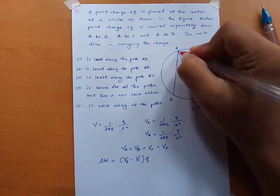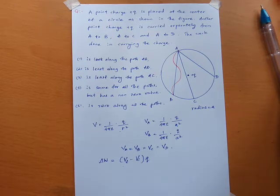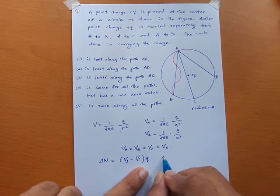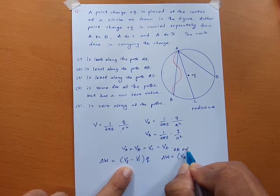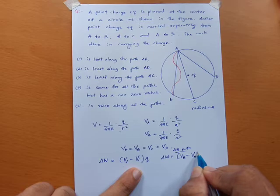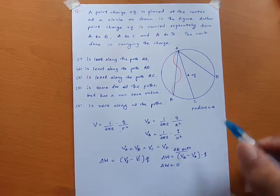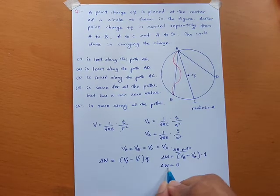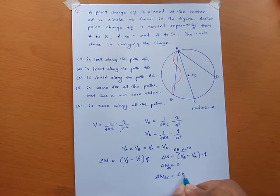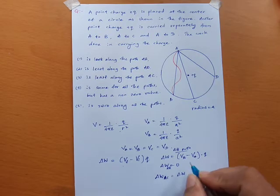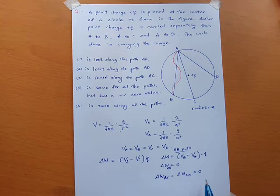Applying the formula for path A to B: ΔW = Q(V_B − V_A). Since V_A = V_B, the work done is zero. Similarly, ΔW_AC = 0 and ΔW_AD = 0. In all cases, the initial and final potentials are the same, so the work done is zero for all paths.